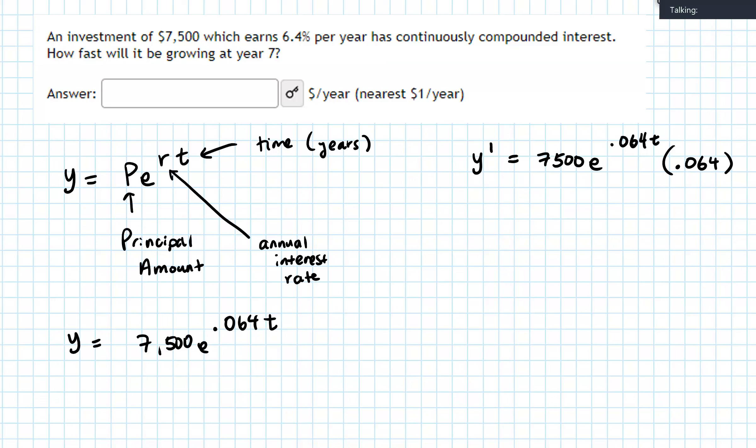And now what we want to do is we are calculating the rate of change specifically at year 7. So I'm going to go ahead and plug in 7 into our derivative formula.